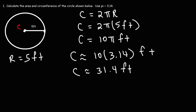So if you were to start on a track and walk around this circle, you would travel a distance of 31.4 feet — given that the radius of the circle is 5 feet.